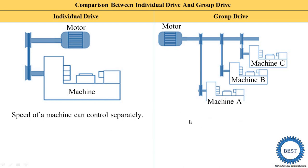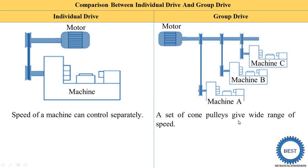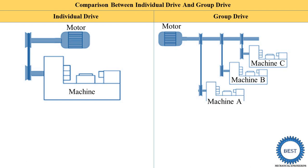Second point: speed of machine can be controlled separately in an individual drive. Speed is controlled separately because every machine has a separate electric motor, so we can easily control the speed of each machine. In a group drive, a set of cone pulleys gives a wide range of speeds. A cone pulley has a number of step pulleys, and by using that we can achieve various speeds for the machines.